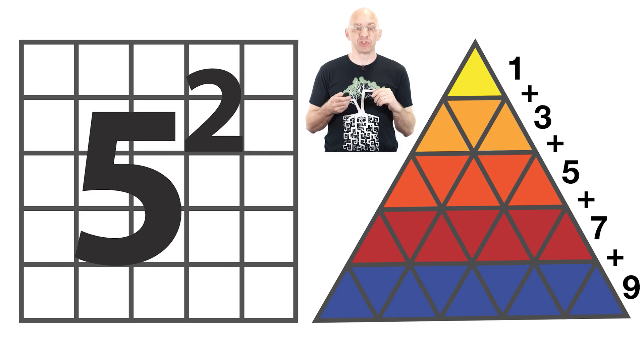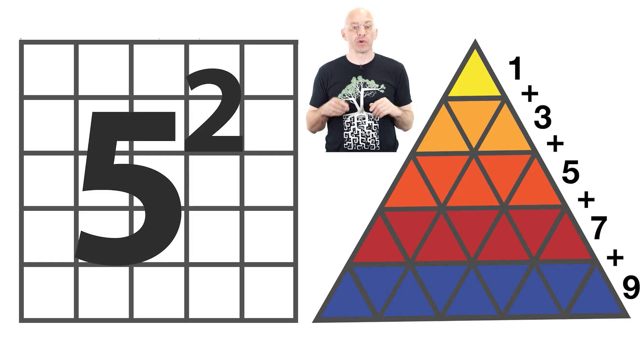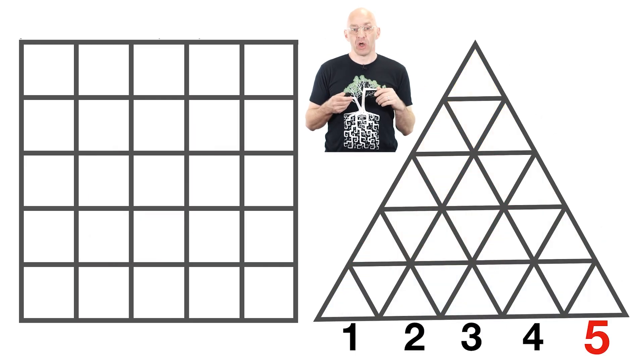Doing the same for general triangular square of width n proves that the sum of the first n odd numbers is n squared. Also super beautiful isn't it? Anyway for what follows you only need to remember that a triangular square of width n contains n squared mini triangles.